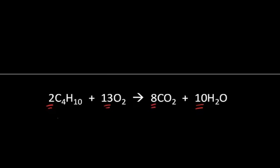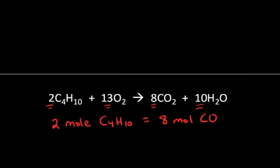This is because this is an equation. What this is telling me is that every time in this chemical change I react two moles of butane with at least 13 moles of oxygen, I'm going to end up making eight moles of carbon dioxide. I can write an equality expression there, and because I can write an equality expression, I can divide both sides of that expression by one side of the equation — in this case, by the moles of carbon dioxide.